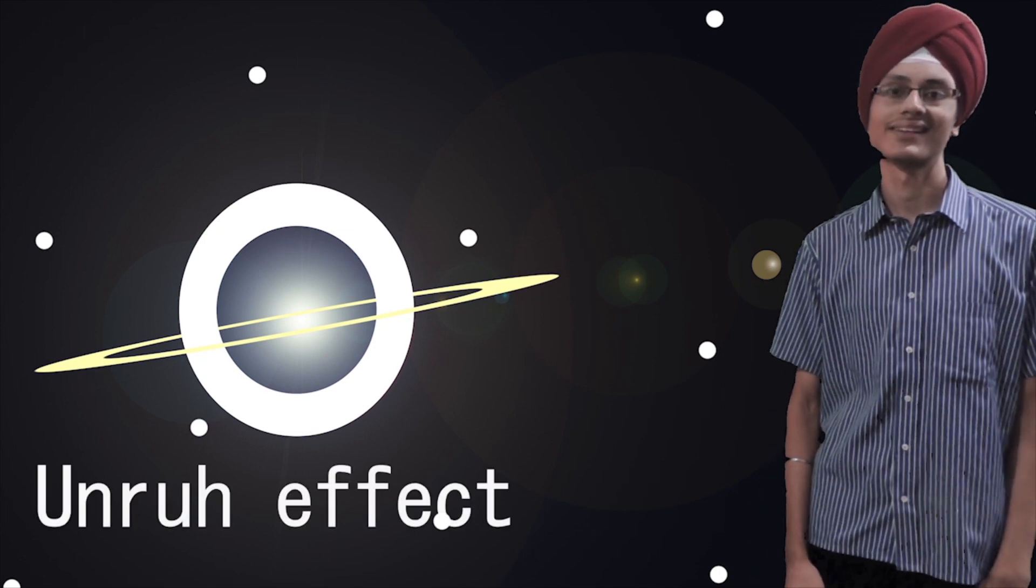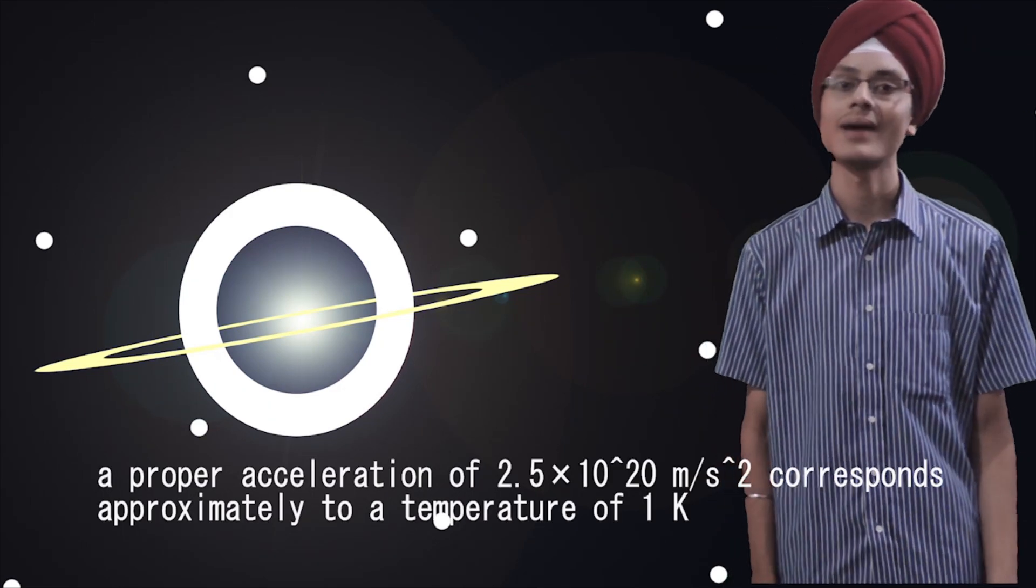According to the Unruh effect, vacuum emptiness is relative. A detector experiencing acceleration can detect a hot gas of particles in vacuum. However, this is possible but at very high acceleration. As we know, vacuum has the energy and that creates this effect.